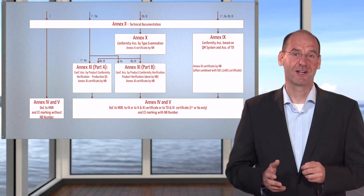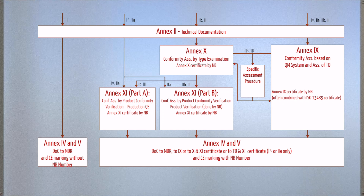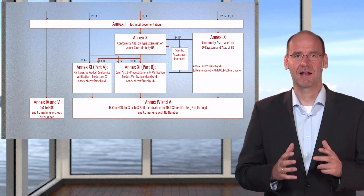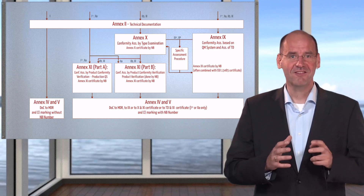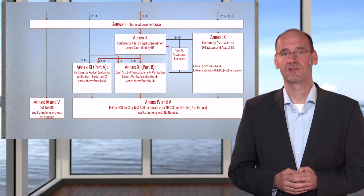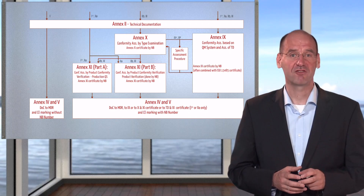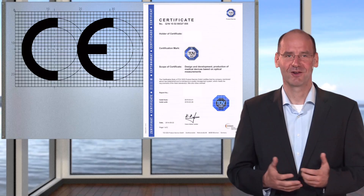For certain highly critical products of class 2B or class 3, there are additional steps required that mandate the involvement of a so-called expert panel, in addition to the notified body. With exception for class 1 products, the notified bodies issue Annex certificates. These are a prerequisite for declaring the conformity and for affixing the CE mark. Therefore, some manufacturers call the procedure the CE certification, even though there is no CE certification.